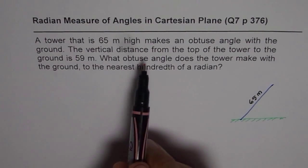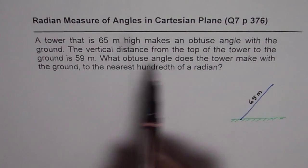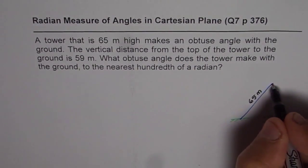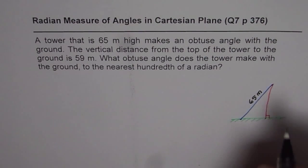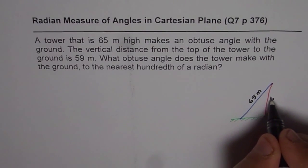The vertical distance from top of the tower to the ground is 59. So this is the vertical distance we are talking about. That should make 90 degrees with the ground right. So this is 59 meters.